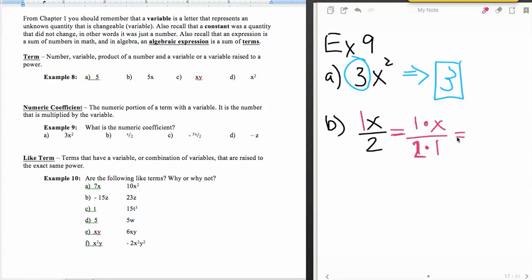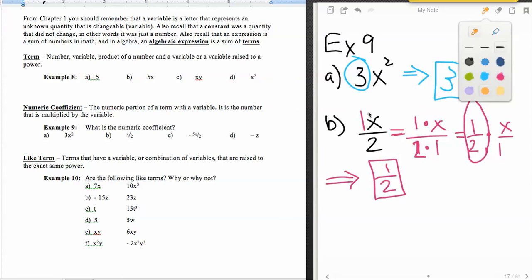And then from that, we could break it back into two parts, one half times the x over one. And from there, that's where we're going to see our numeric coefficient. So the numeric coefficient of this thing is one half. And an easy way of seeing that is to look for the number in the numerator and the number in the denominator and make that your numeric coefficient.